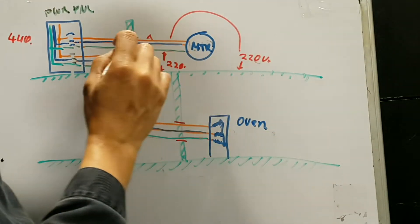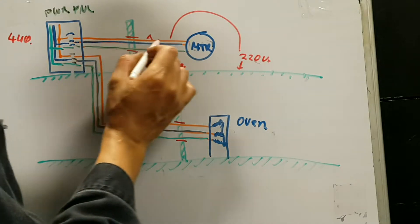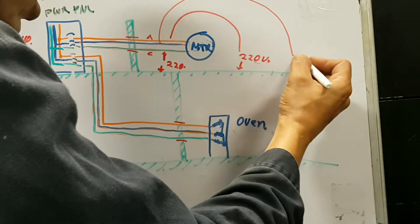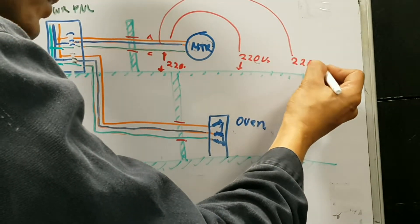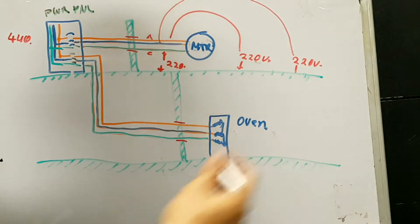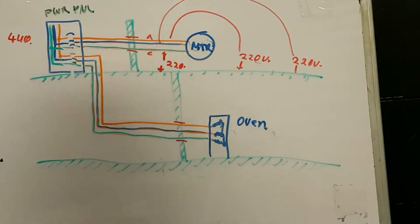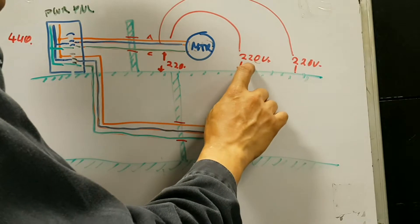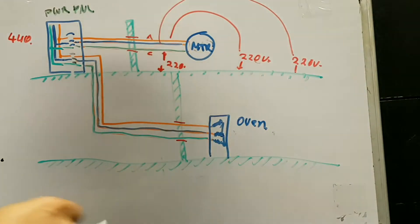Now, the difference of potential of the Charlie phase, this one over here, to the ship, it is also 220 volts. But they are in different phases. This is phase Charlie, phase alpha, and phase Bravo.